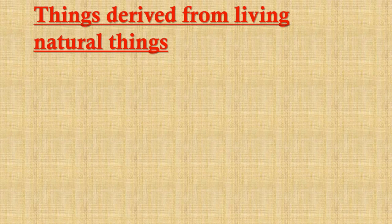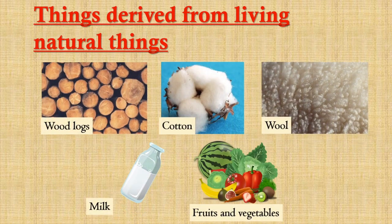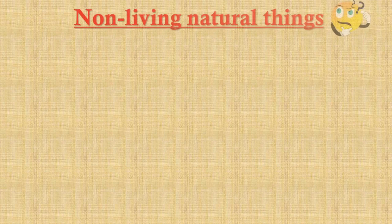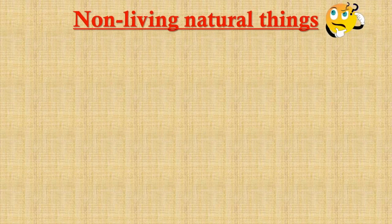There are certain things which we can obtain from natural living things and categorize them as natural as well. These are wood logs, cotton, wool, milk, fruits, and vegetables. All these items are derived from natural sources.